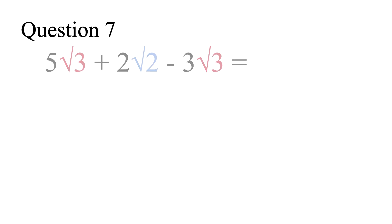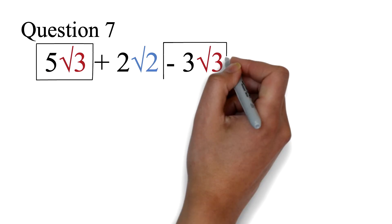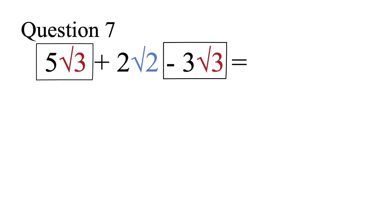Finally, let's look at some operations on square roots. Question 7: add 5√3 + 2√2 − 3√3. You can only add or subtract if the radical part of the expression is exactly the same. We can work on 5√3 − 3√3 because they both have √3. We subtract 5 minus 3 to get 2, then bring the √3 after it. We cannot work on the 2√2 because it has √2, not √3 — the radical part must be exactly the same. So we just write 2√2. Our final answer is therefore 2√3 + 2√2.